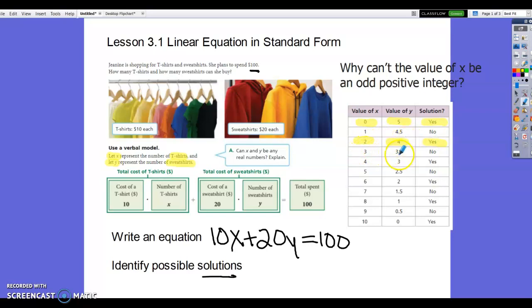Three and 3.5. Nope, we're not going to have 3.5 sweatshirts. Four and three is a yes. Those are reasonable answers for numbers of shirts and sweatshirts. We've got 2.5, so that one's a no. Six t-shirts and two sweatshirts is a yes. And then we've got 1.5 as a no. Eight and one is a yes. And then 0.5. So the last one would be 10 and zero is a yes. So you can see that the number of t-shirts are even numbers. When you have an even number of t-shirts, then that means you're going to have an integer answer for the number of sweatshirts. So both of those are reasonable. So those could be solutions.